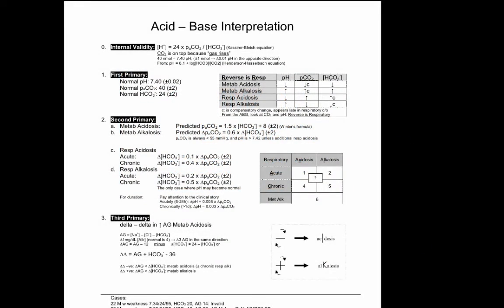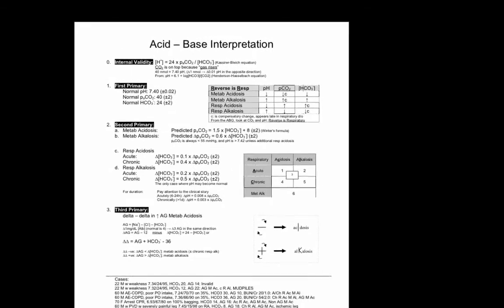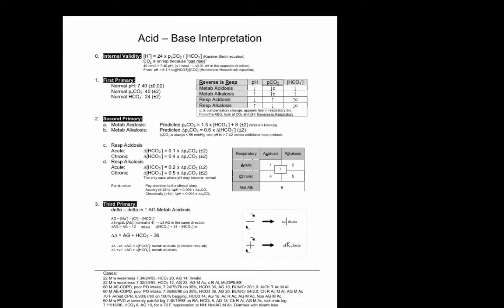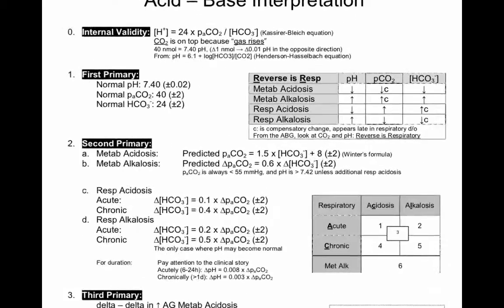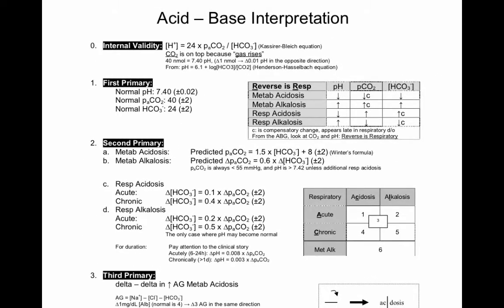Now for putting it all together, here's a cheat sheet that will tell you how to do it step by step. First, the first primary will depend on the pH. If the pH is low, then it's an acidosis, and if it's high, then it's an alkalosis.